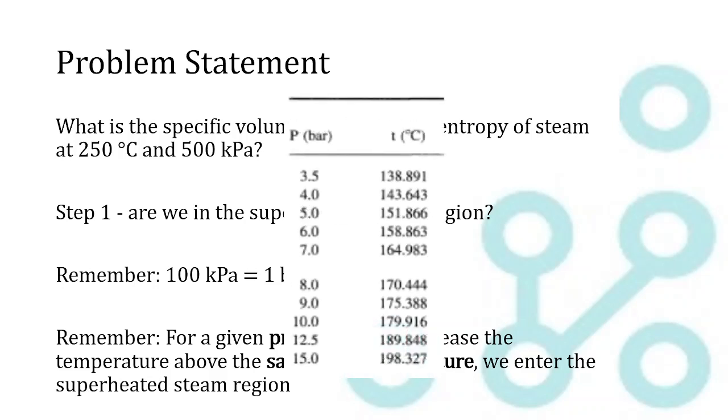To zoom in on that table a little bit, these are some saturation pressures and the associated saturation temperatures. We can see that at 5 bar, our saturation temperature is 151 degrees Celsius. So if we're at 250 degrees Celsius, we safely know that we are in a superheated steam region.